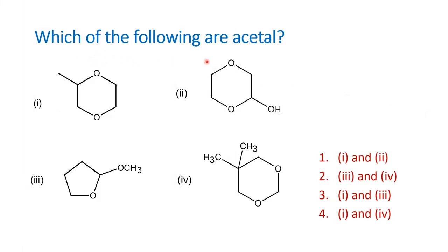Now let us see the question: which of the following are acetal? There are four molecules given and they have asked which among the following are acetal, with various combinations of answers. Before we actually see the answer and discuss the question and find out a simple trick to identify an acetal, we will learn the mechanism of formation of acetal and hemiacetal, some examples, and their importance in organic chemistry.